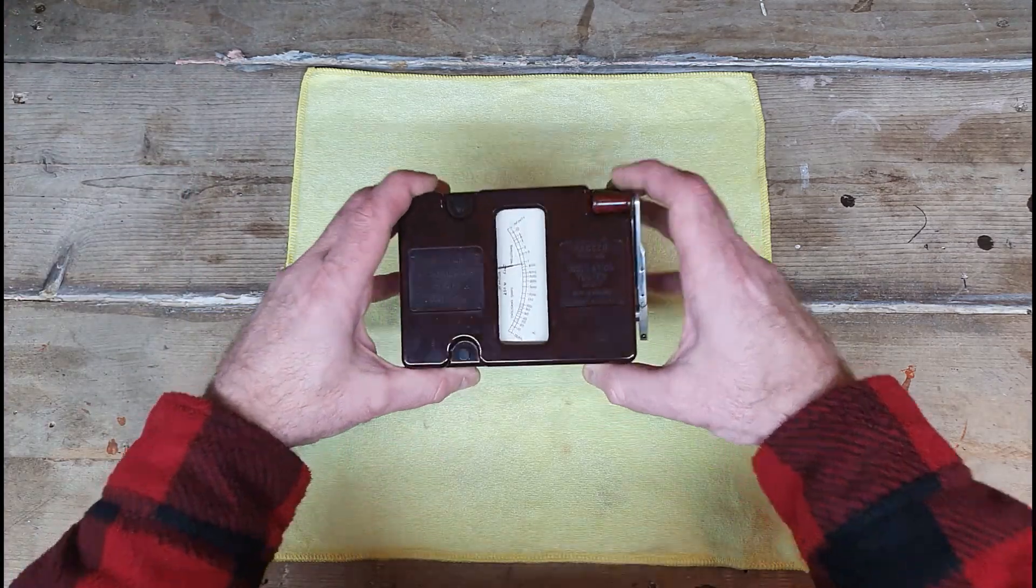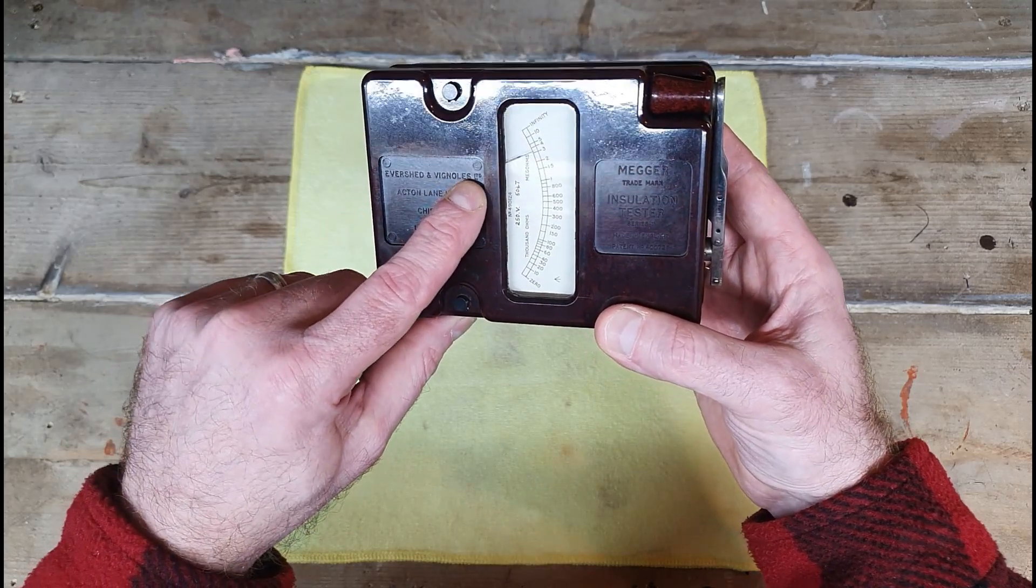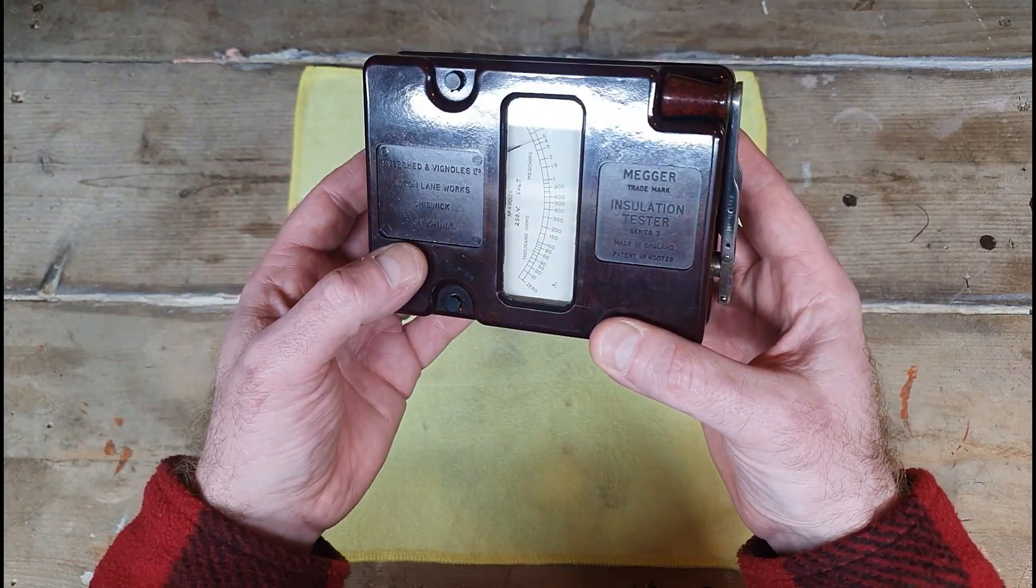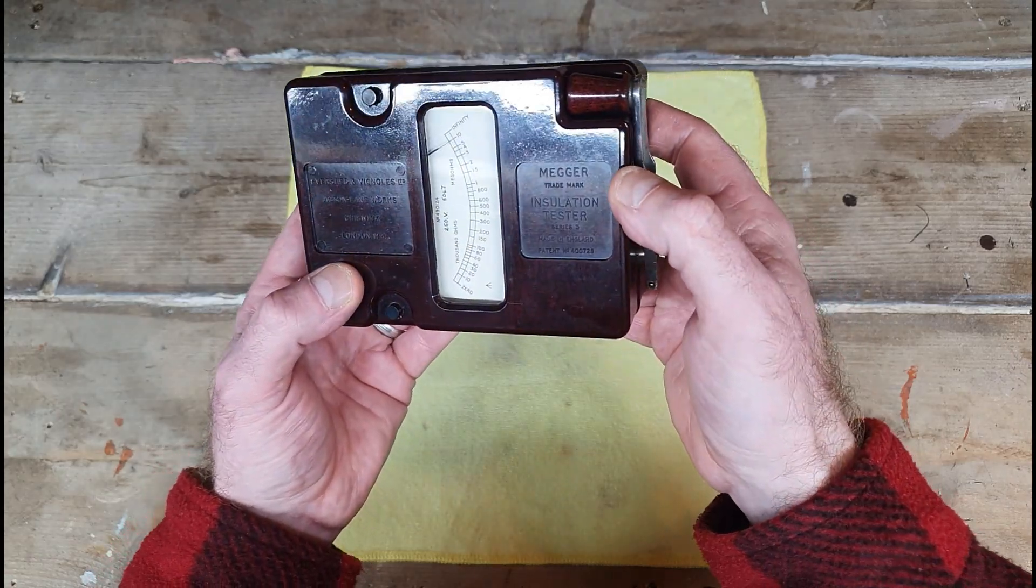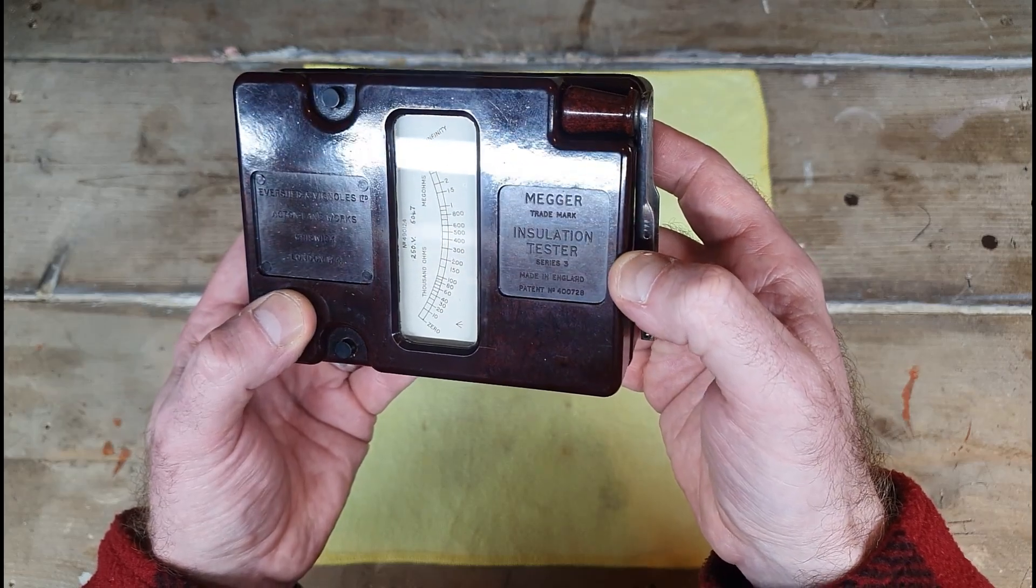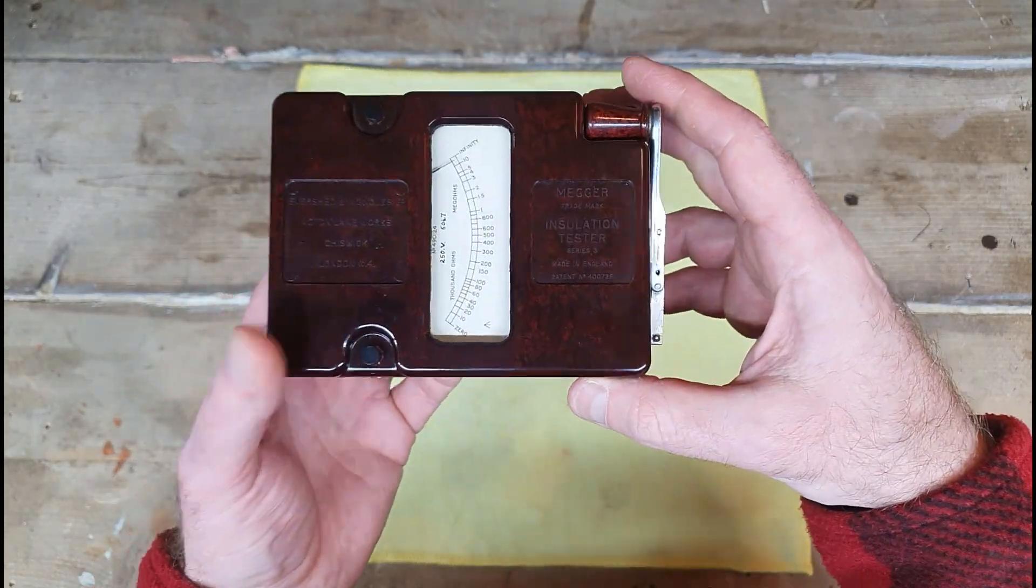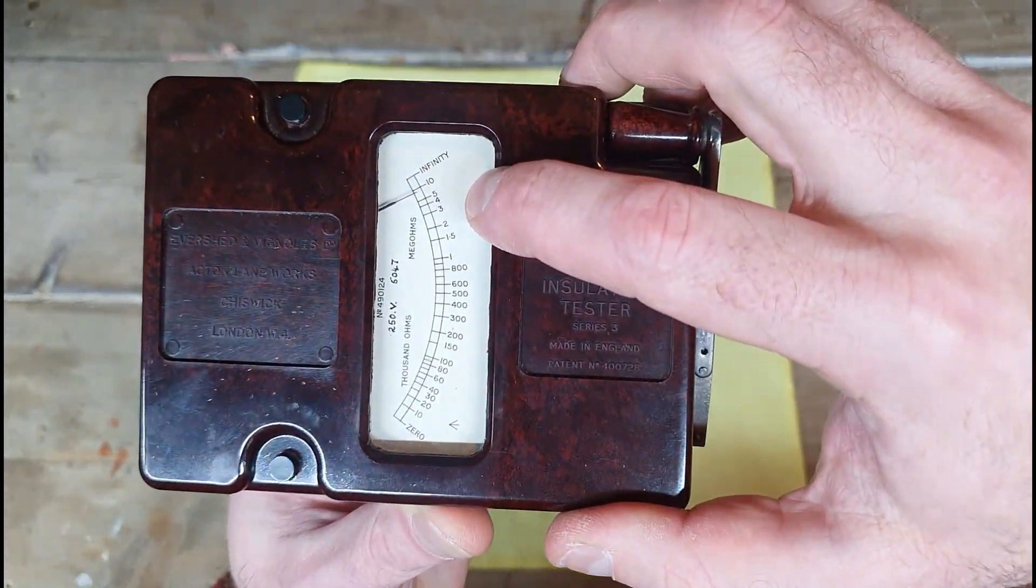Let's have a look at some of the writing. We've got Evershed and Vignoles Limited, Acton Lane Works, Chiswick, London W4. On the right we've got Mega trademark insulation tester series 3, made in England, and a patent number.